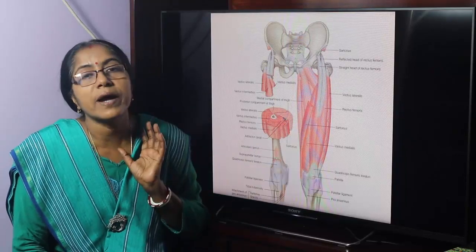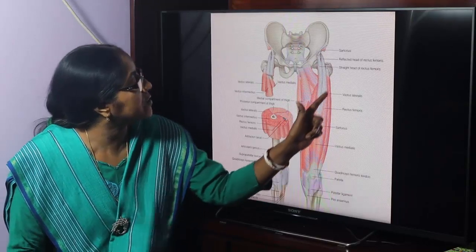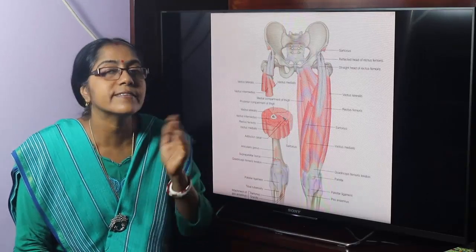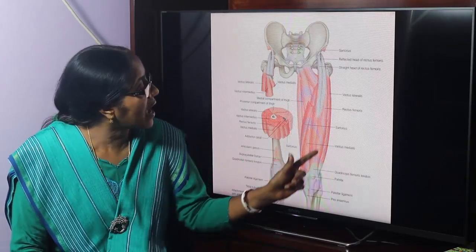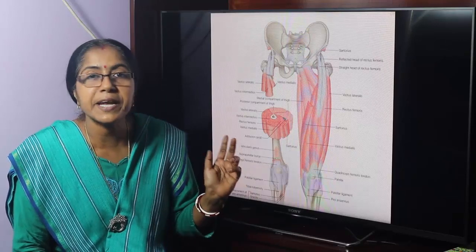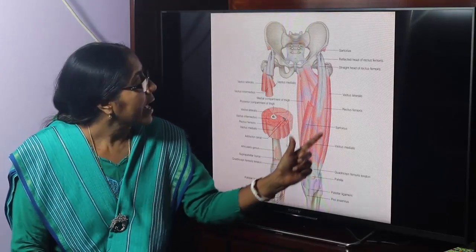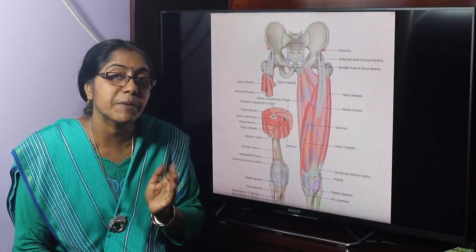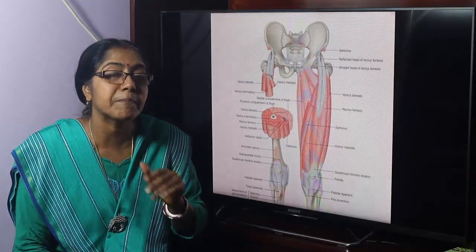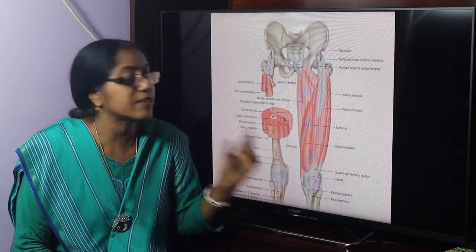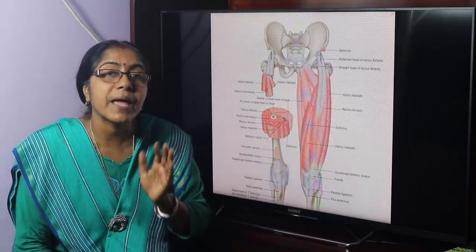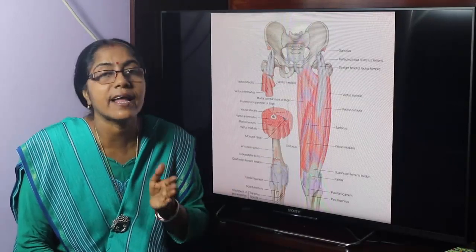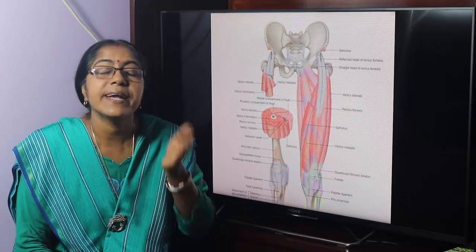This is the quadriceps femoris: rectus femoris, vastus lateralis, vastus medialis, and vastus intermedius. Rectus femoris is a bipennate muscle. The muscles of the anterior compartment are: sartorius, quadriceps femoris, articularis genu, and tensor fasciae. Rectus femoris is an example of a bipennate muscle.